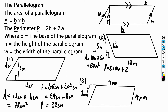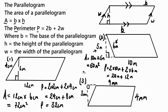For the perimeter of number two: 2 times the base (2 × 10 m) plus 2 times the width (2 × 6 m) gives 20 meters plus 12 meters, so the perimeter equals 32 meters.